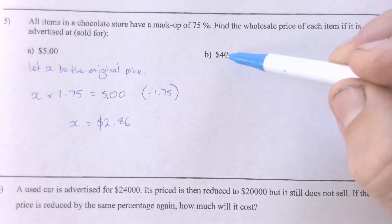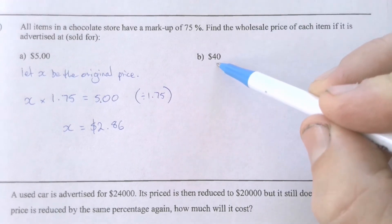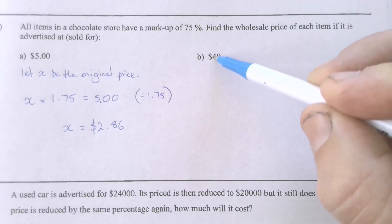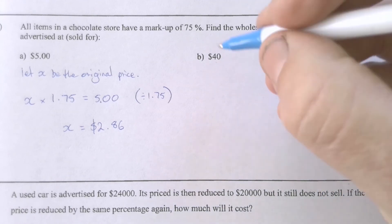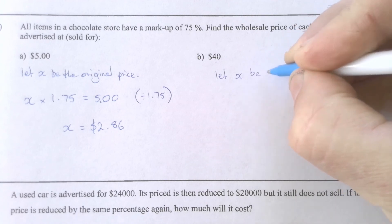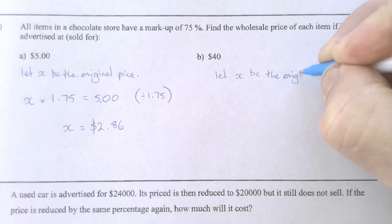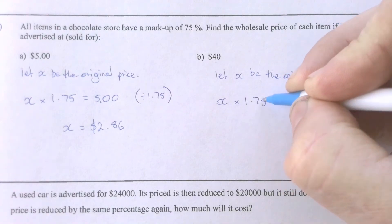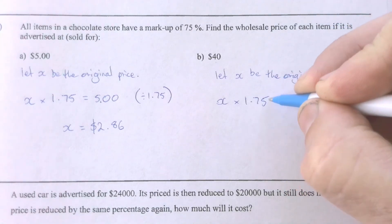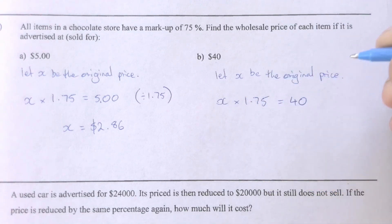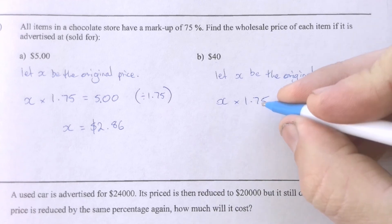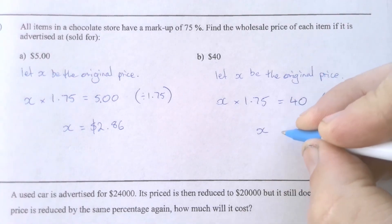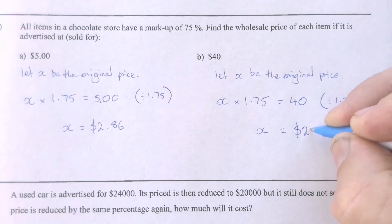In the second example — really expensive chocolate — remember this is the retail price you're paying. The wholesale price is what the shop owner paid, and he's marked it up by an additional 75%, so 175% in total. Let X be the original price: the original amount increased by 175% equals $40. Using the balance method, divide both sides by 1.75, and we find the shopkeeper paid $22.86.